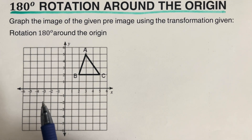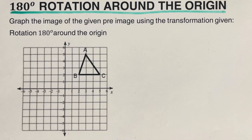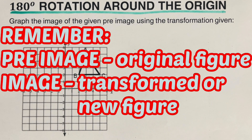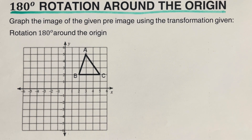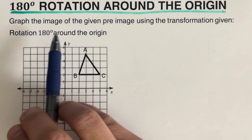Before jumping into the example, there are two terms to remember. The first is pre-image, which refers to the original figure. The second is image, which is the transformed or new figure.